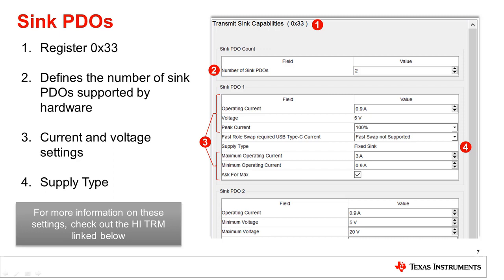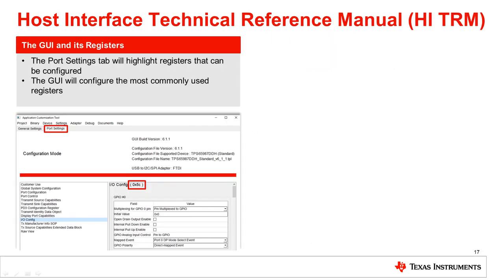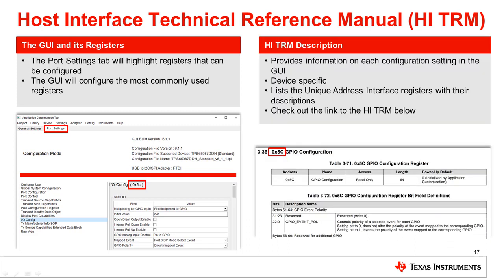For more information on these settings, check out the Host Interface Technical Reference Manual linked below. The device-specific Host Interface Technical Reference Manual can be used for more information on configuration settings. The GUI's port settings tab contains the configuration settings and their corresponding registers. The GUI allows configuration for the most commonly used registers. The manual provides information on each configuration setting, lists the registers, and gives the unique address interface commands.